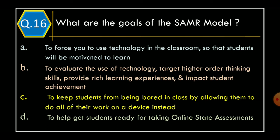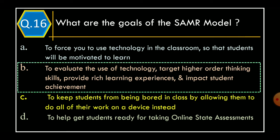Question 16: What are the goals of the SAMR model? Option A: To force you to use technology in the classroom so that students will be motivated to learn. Option B: To evaluate the use of technology, target higher-order thinking skills, provide rich learning experiences, and impact student achievement. Option C: To keep students from being bored in class by allowing them to do all their work on a device. Option D: To help get students ready for taking online state assessments. And the correct option is Option B.